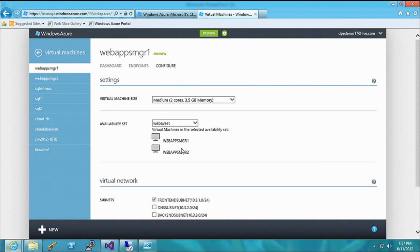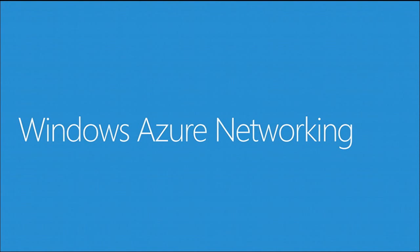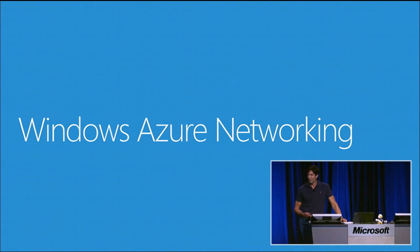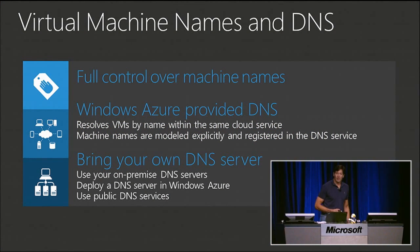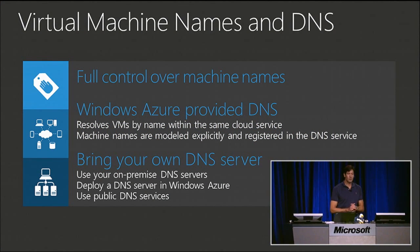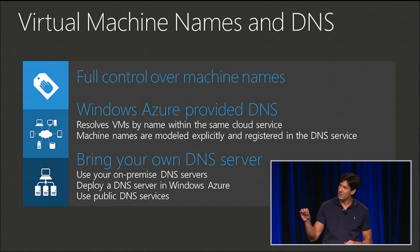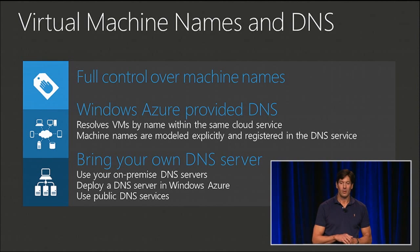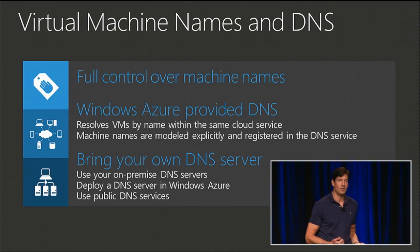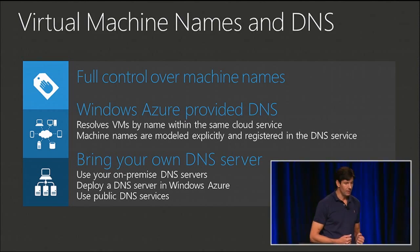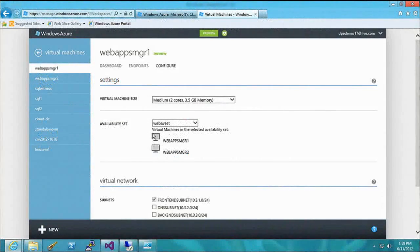Let's delve into Windows Azure networking. We've added a bunch of new features enabling cool scenarios. First, we're giving you full control over machine name — the name you pick is registered with Windows Azure Provided DNS in the DNS namespace for the cloud service, making that name accessible for lookup by any machine in that cloud service.